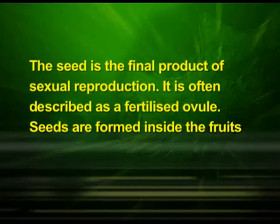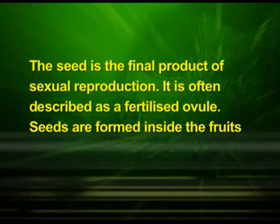Now let us discuss the seed. In angiosperms, the seed is the final product of sexual reproduction. It is often described as a fertilized ovule. Seeds are formed inside the fruits. A seed typically consists of seed coats, cotyledons and an embryo axis. The cotyledons of the embryo are simple structures, generally thick and swollen due to storage of food reserves, as found in legumes.